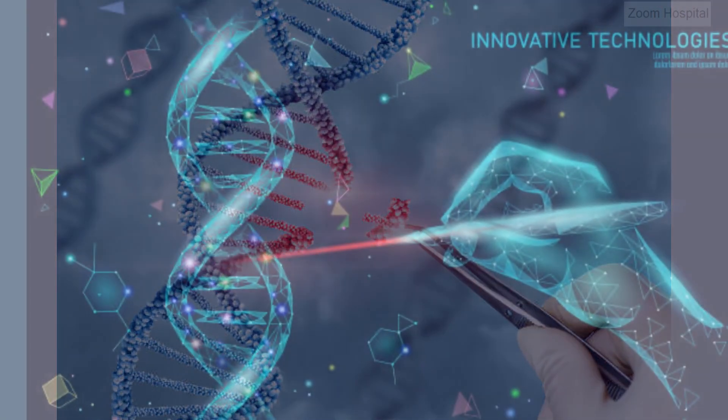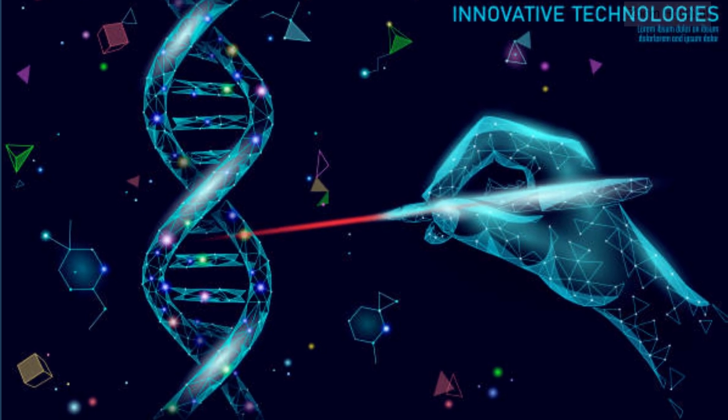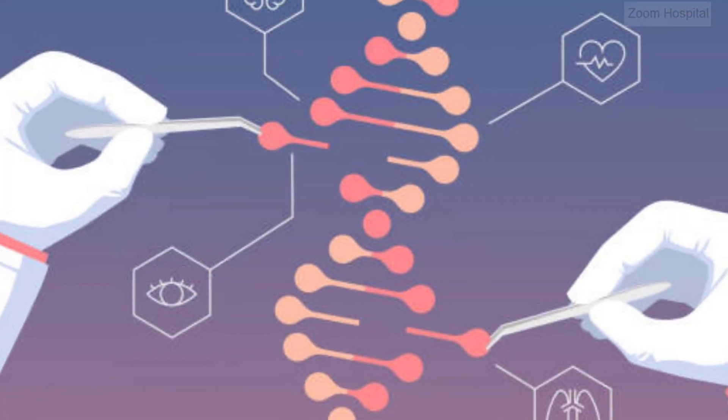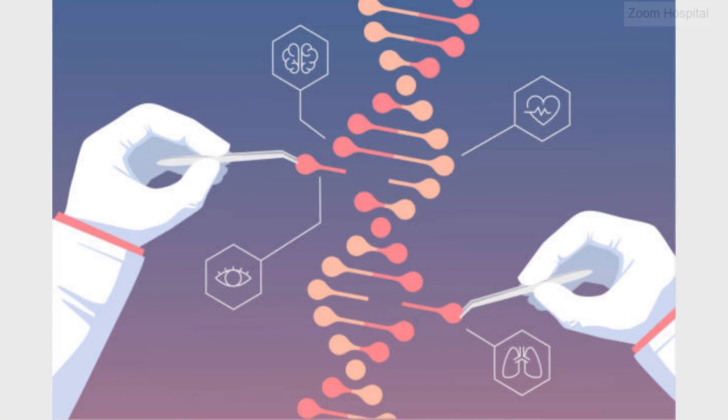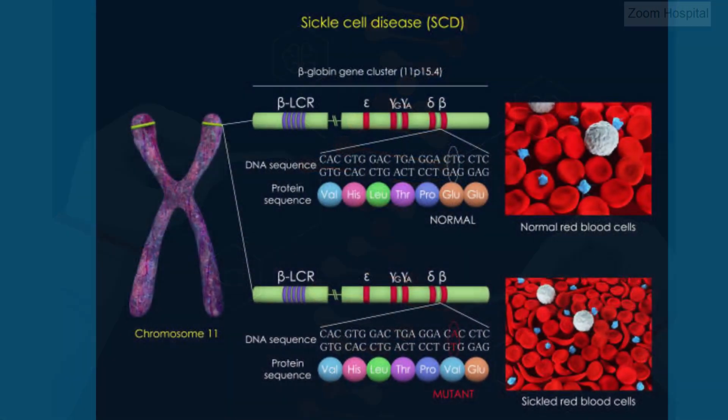One: Identifying the target. The process begins by identifying the specific gene or DNA sequence that scientists want to modify. This could be a gene associated with a particular disease or a desired trait.